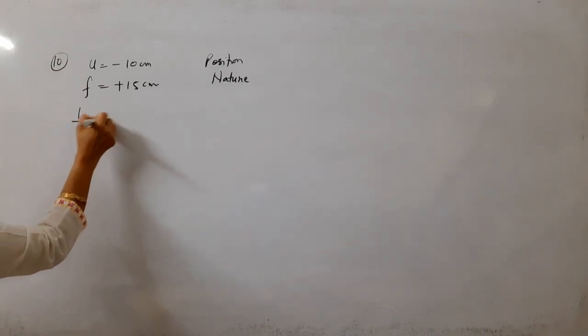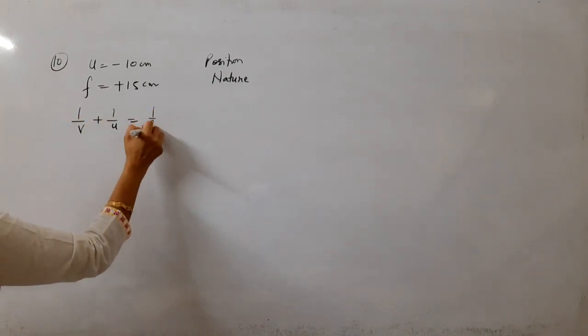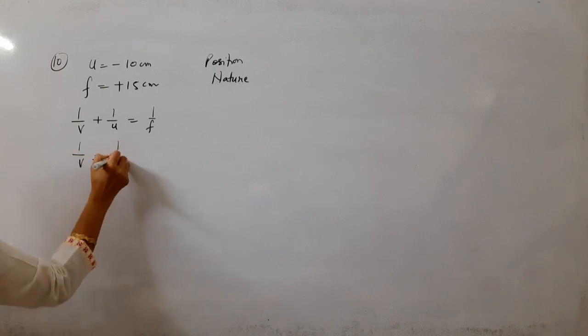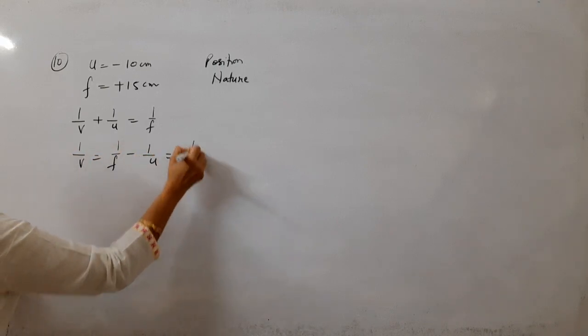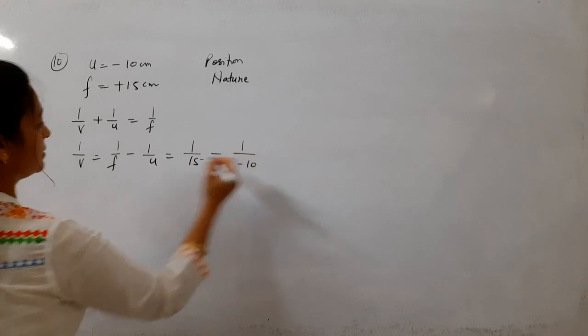We can directly apply the mirror formula. 1 by v is equal to 1 by f minus 1 by u. f is 15 and u is minus 10.